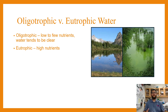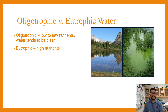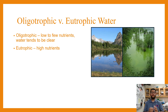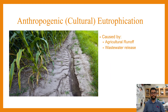When we hear the word eutrophic, that means high nutrients — typically from human sources such as agriculture, building, and sedimentation. Oligotrophic means very few nutrients. Think of oligarchs — very few people in charge. Oligotrophic water has very few nutrients and tends to be clear, while eutrophic water has a lot of nutrients and tends to be very green, like the one shown on the right.